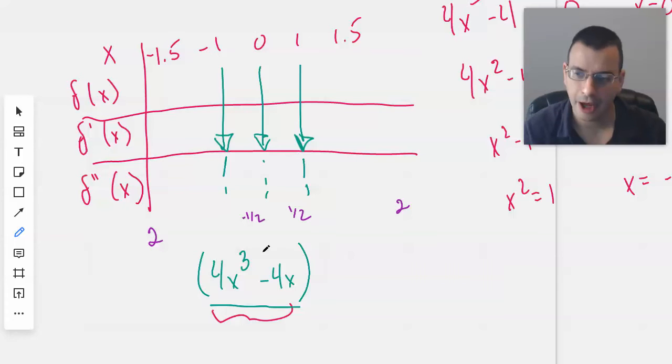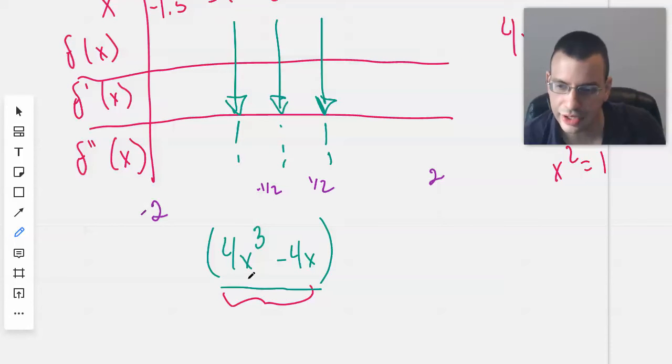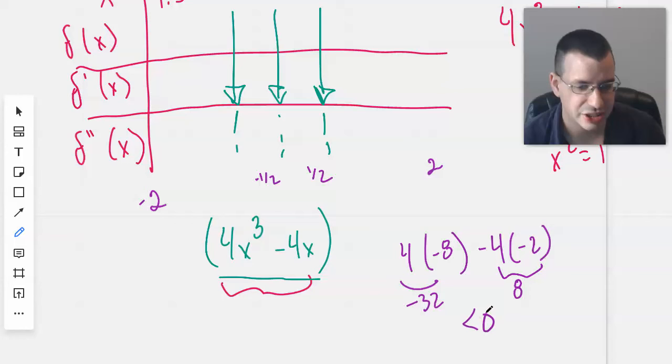The concavity hasn't changed between 1.5 and 2, even though it's not part of our domain. Plugging in -2: 4(-2)^3 = -32, minus 4(-2) = +8. So -32 + 8 < 0, this will be negative.